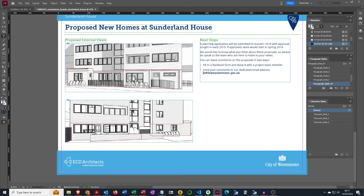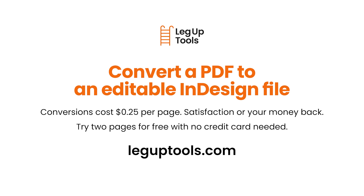There are always tweaks to make to files — some files require more tweaks than others. But nearly all the time it's much, much quicker than creating a file from Illustrator PDFs, having to copy and paste from Word, extracting from Acrobat, and all the other options available to you. You can also see we've got auto-generated paragraph styles, swatches, and character styles to make it easy to edit multiple items at the same time. To find out more, visit leguptools.com and please get in touch if you've got any feedback or queries.